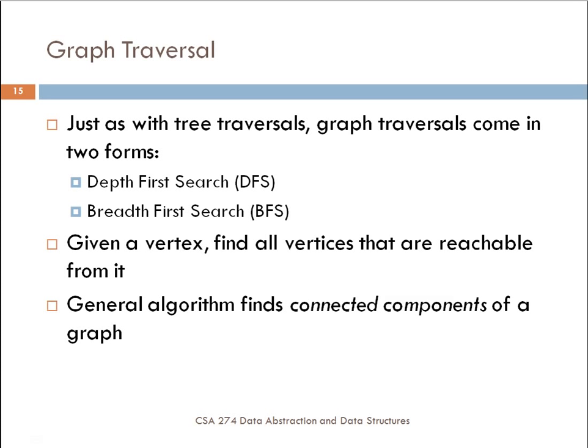The other thing that these search algorithms do is that the general algorithm allows you to find things called connected components. A connected component in a graph is basically a list of nodes as well as edges that connect vertices to each other.